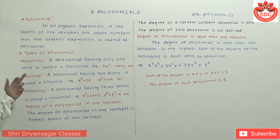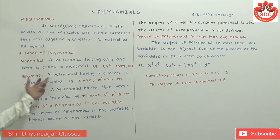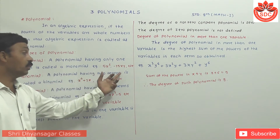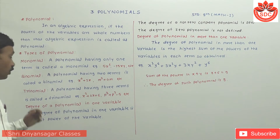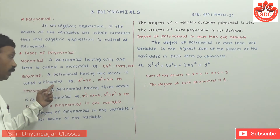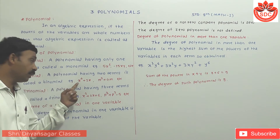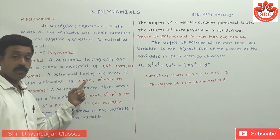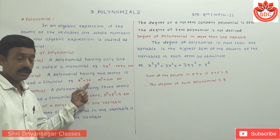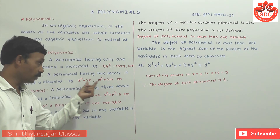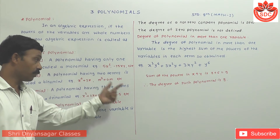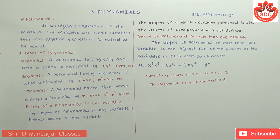Binomial. Bi is 2 — a polynomial having two terms is called as the binomial. For example: x⁴ plus 2x. This is two terms. Here is m² plus 4m, etc.